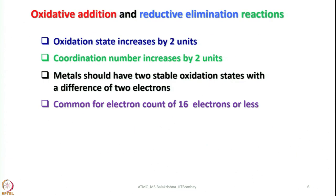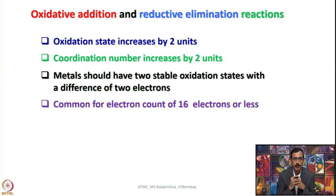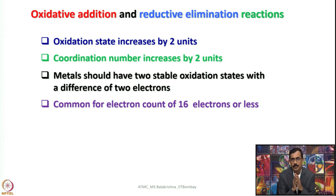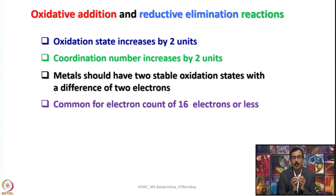Now with this information, let us try to understand more the definition of this reaction and what are the prerequisites in order to perform an oxidative addition reaction or reductive elimination reaction. During the process of oxidative addition, the oxidation state of a metal increases by 2 units: if you take a metal in zero valent state it becomes plus 2, if in plus 1 it becomes plus 3, plus 2 becomes plus 4, plus 3 becomes plus 5. So a metal should have two stable oxidation states with a difference of two electrons, and in this process coordination number increases by 2 units.